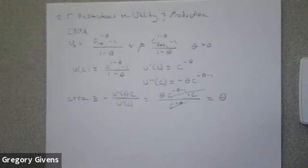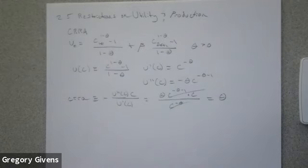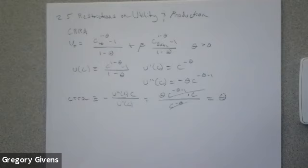The bigger theta gets, the more concave the utility function — it will look highly concave, with an extreme kink for really large theta. As theta falls closer to zero, the utility function becomes more linear. A linear utility function characterizes someone who is essentially risk neutral over different consumption streams, while a highly concave utility function with large theta characterizes someone whose preferences are highly risk averse — they want to avoid big swings in consumption over time.